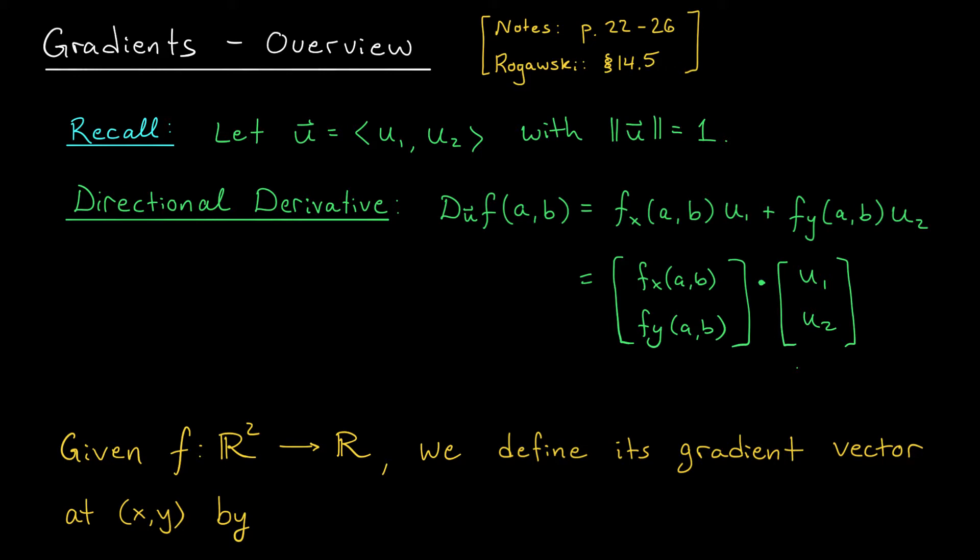It turns out there are lots of formulas in multivariable calculus where this same kind of trick can be applied. The two partial derivatives fx and fy appear together, and the formula can be simplified by bundling them into a single vector. Can you think of any examples like this that we've seen so far? For now, trust me when I say that this vector appears pretty often in multivariable calculus. Often enough that it deserves its own name. We're going to call it the gradient vector of our function f.